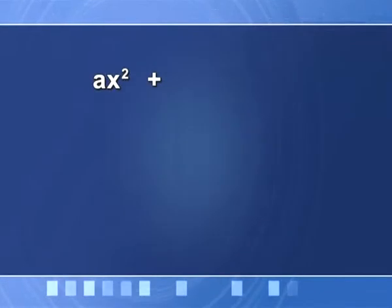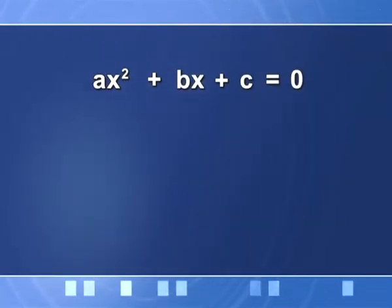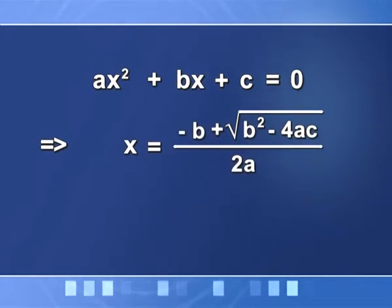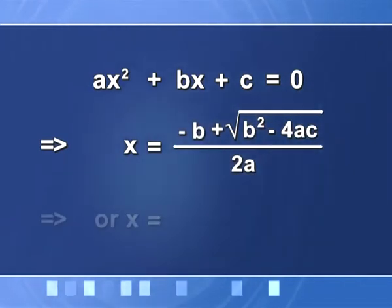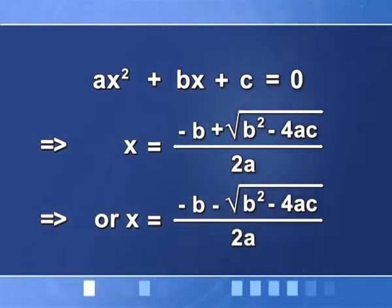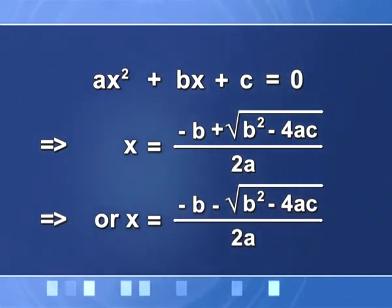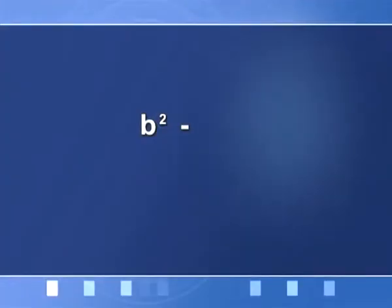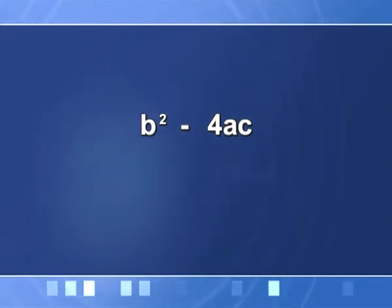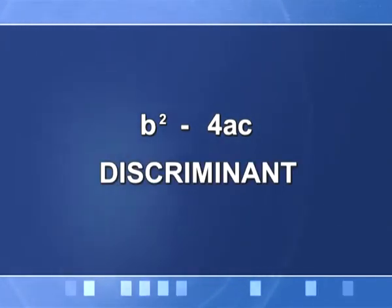So this is another way of completing the squares and arriving at the result — finding the roots of the equation. To repeat: Ax² + Bx + C = 0 gives x = [−B + √(B² − 4AC)] / (2A) and x = [−B − √(B² − 4AC)] / (2A).